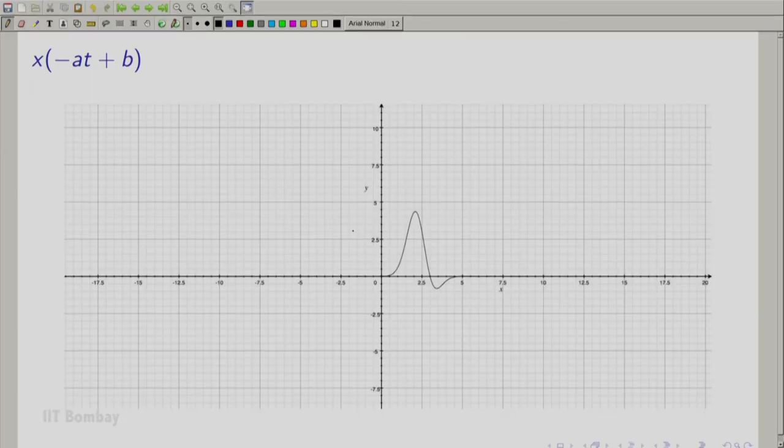So, this is the graph of x(-at + b). As you can see here, b is positive as I remind you again, b is positive. However, the graph has shifted to the right and not to the left. So, here I come to the question Ashwit asked, the operation you apply first, shift or scaling is important and if you don't take care of that, you won't be able to analyze situations like this.